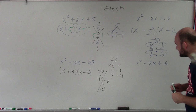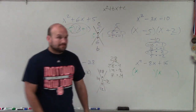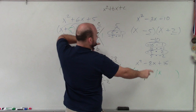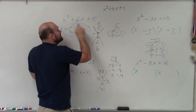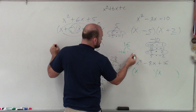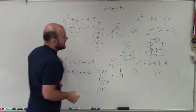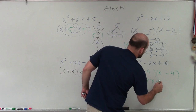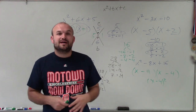Moving on to the last one: x squared minus 8x plus 16. I have x times x for the first terms. Notice I have a positive 16, so I write all the factors of 16. But my middle term is negative, so I'm only concerned with both factors being negative. The pair that adds to negative 8 is negative 4 and negative 4. So the answer is x minus 4 times x minus 4, which is actually a perfect square trinomial. That is your basic overview of how to factor a quadratic when a is equal to 1.